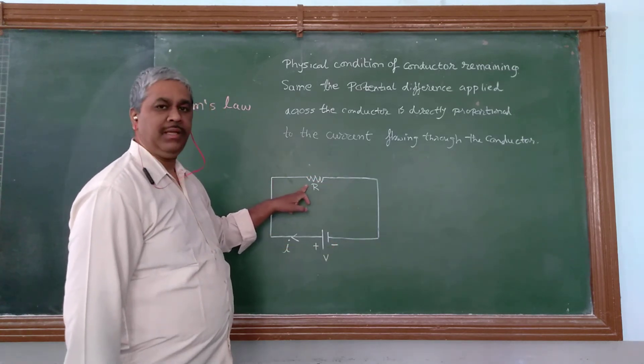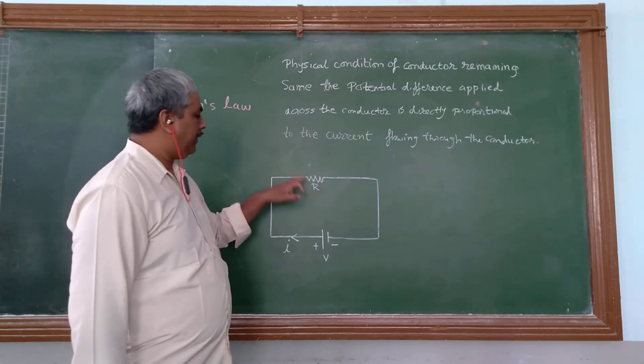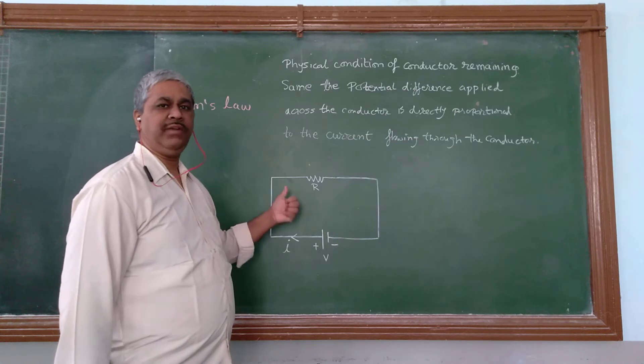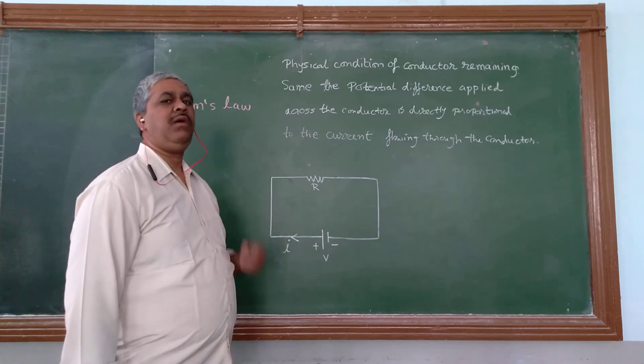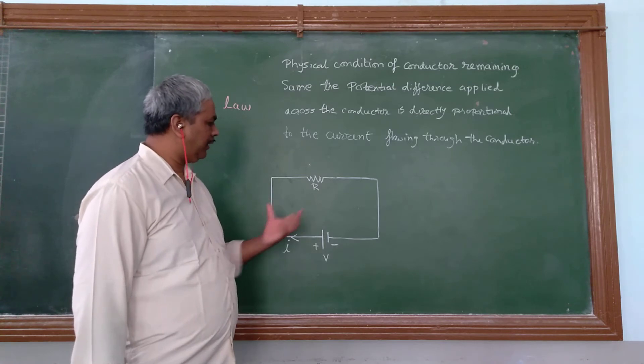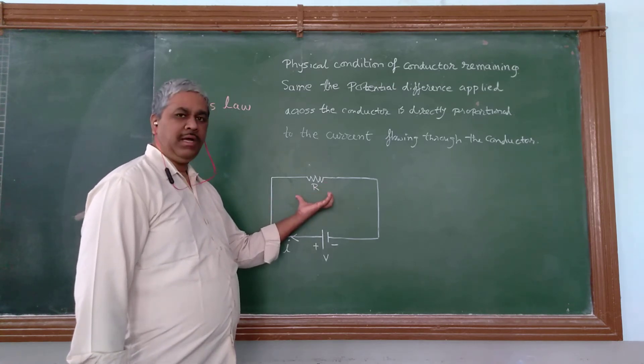This symbol represents the resistance. Now, since we want to measure the potential difference, the potential difference is measured by using a voltmeter. A voltmeter is used to measure the potential difference across the resistance.